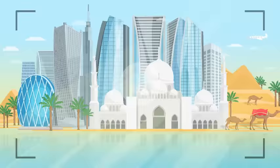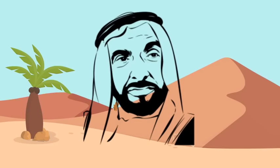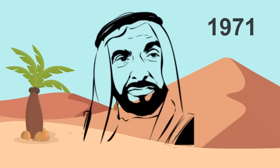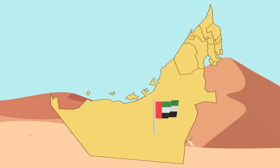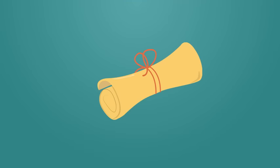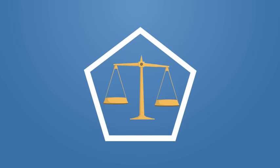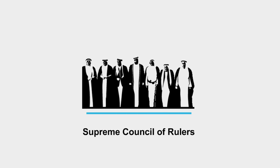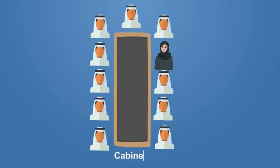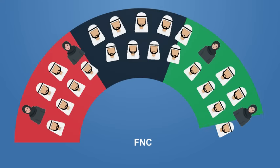The United Arab Emirates is a federal state founded in 1971, and it consists of seven sovereign provinces governing their own territories. The constitution established the legal system based on five pillars: the supreme council of rulers, the president and his deputy, the council of ministers, the national council, and the judiciary.